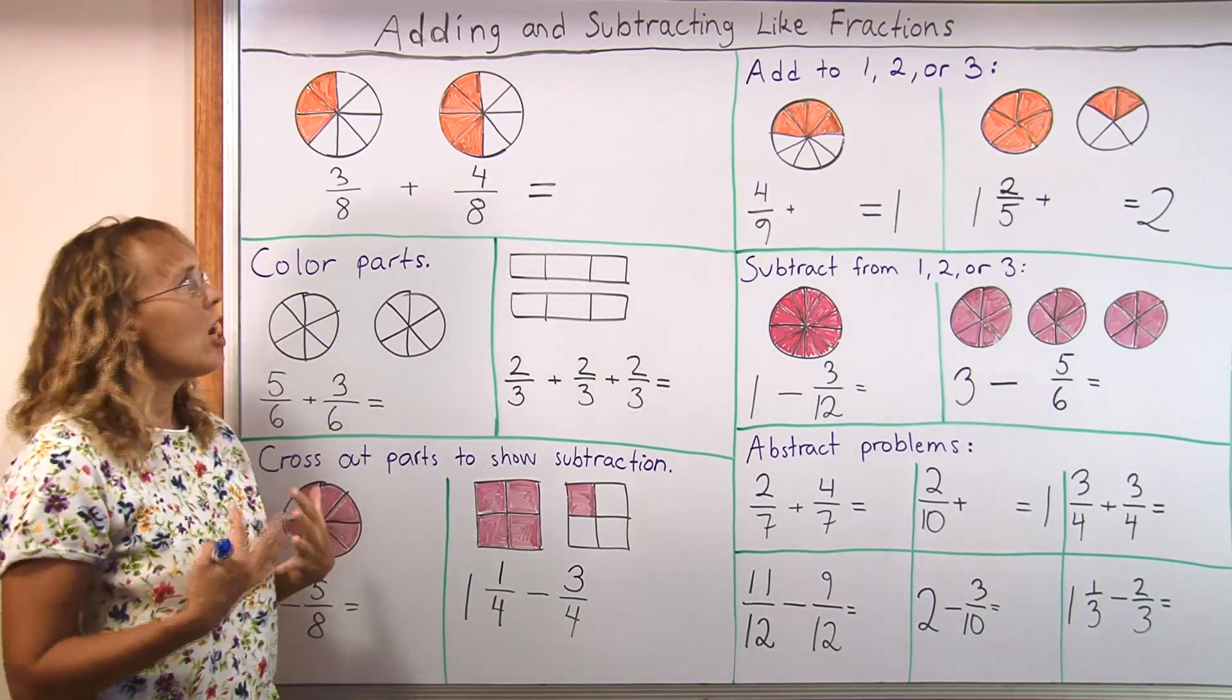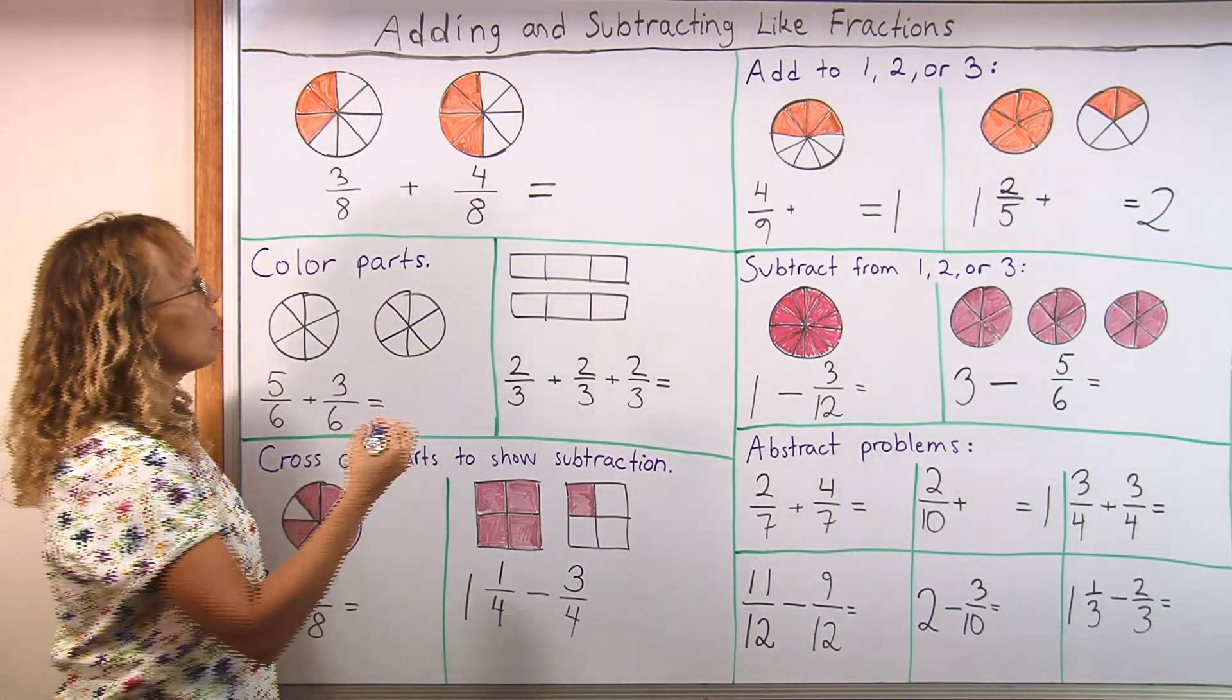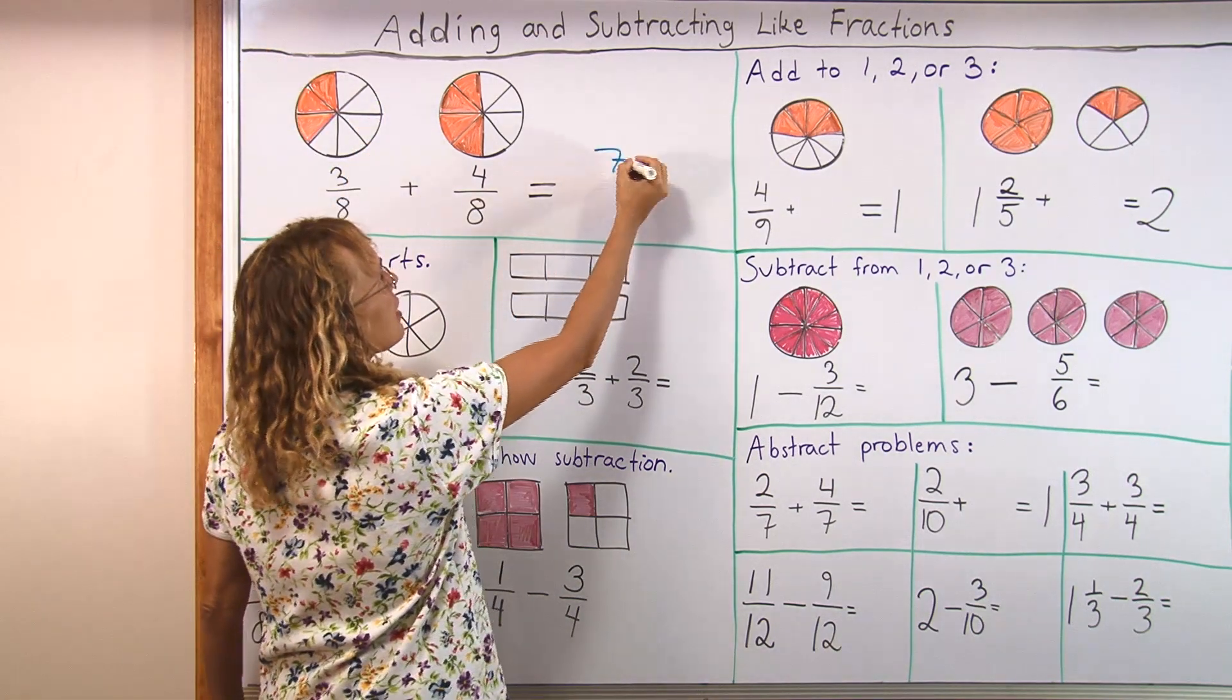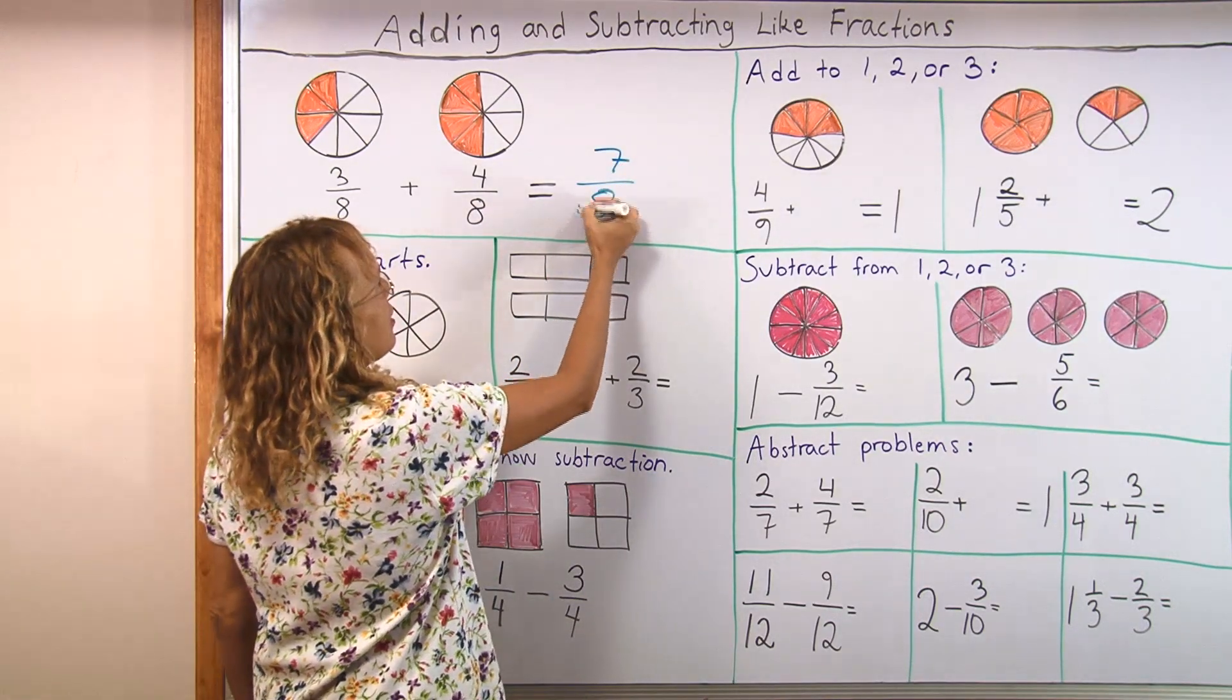And it is very easy. This is a very easy problem and easy concept because all you do is look at, okay, three slices, four slices. So when you add you will get seven slices and all of the slices are going to be eighths. Eight here, okay.